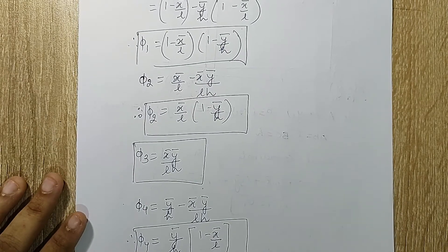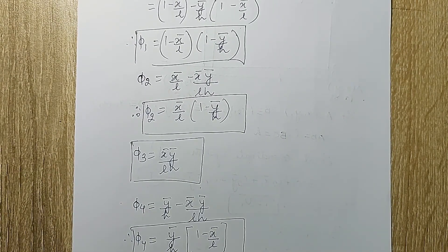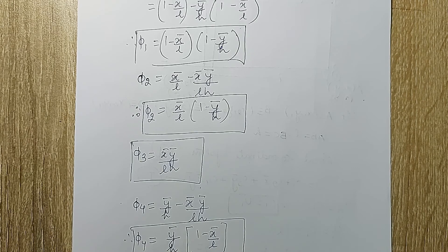One important thing to remember: I have written this in the local coordinate system where one corner is at (0, 0). It is not compulsory to take node A as the origin — you can take any other node, but ensure at least one node is at (0, 0). With this I end the session; in the next session I will show a numerical example on this topic.